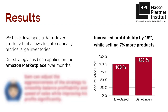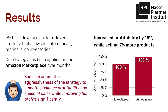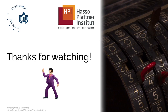This strategy is fully automated. It includes knobs to adjust the strategy's aggressiveness. This way, Sam can freely balance speed of sales with profit per sale in order to control inventory levels and cash flow over time. And of course, he has increased his profits significantly as well. Thanks for watching. Bye-bye.